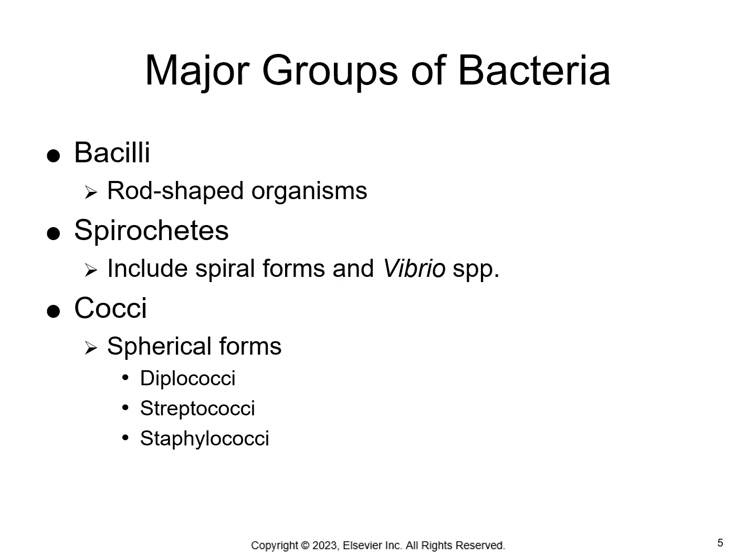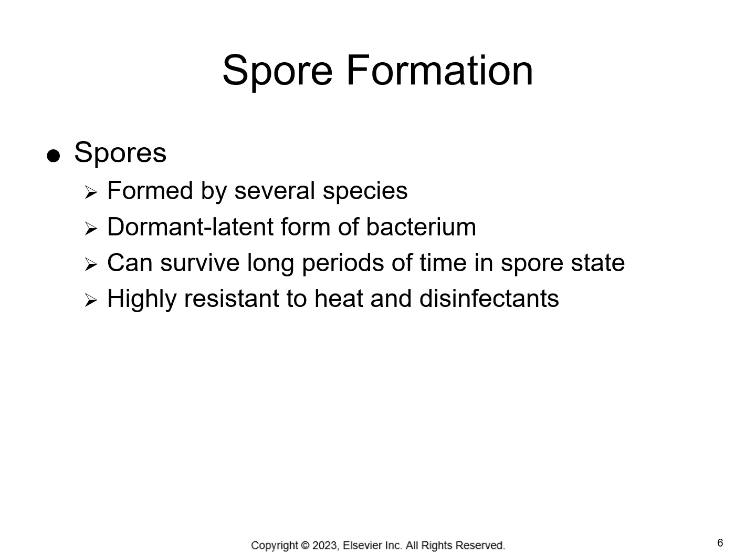Bacteria are grouped based on their cellular shape. Bacilli are rod-shaped, spirochetes are spiral-shaped, and cocci are sphere-shaped. We also have diplococci, which are pairs; streptococci, which are chains; and staphylococci, which are irregular — kind of like a cluster of grapes. There are more, but these are the ones we're going to focus on. There are illustrations of these in your book that give you a visual of what the different types of bacteria look like.